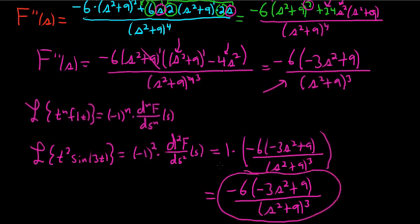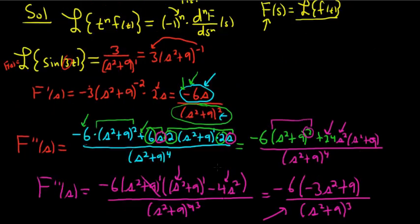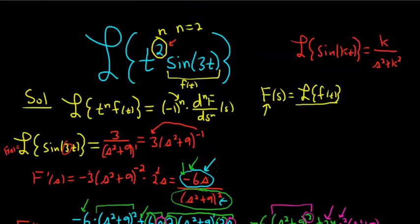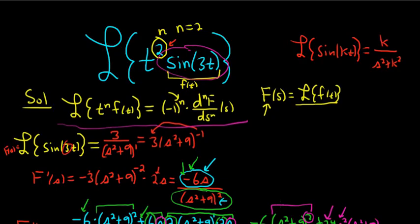The most important thing in this problem is to realize: whenever you have t to a power times something you can take the Laplace of, you can use this formula. It took about 8 minutes — I'm glad n wasn't 3! That's one way to do it. I hope this helped.